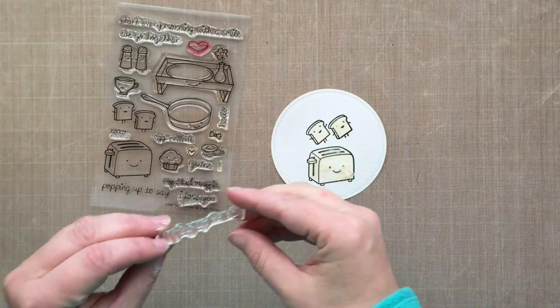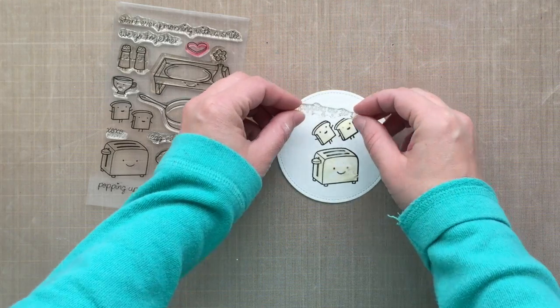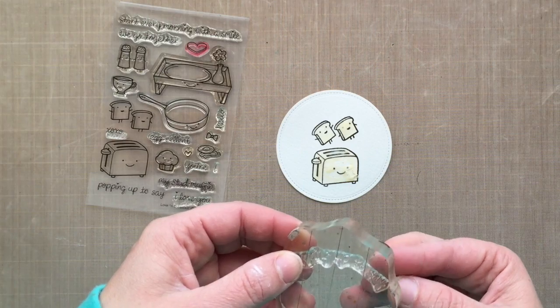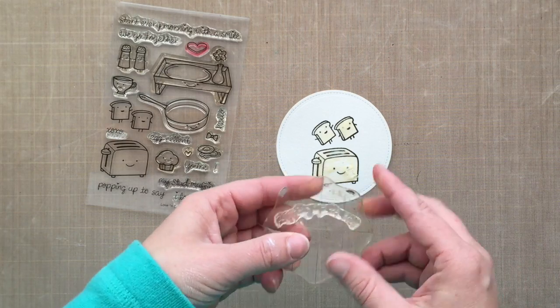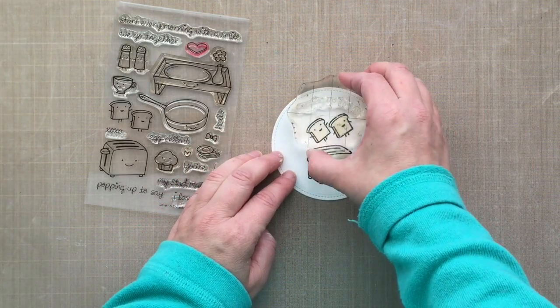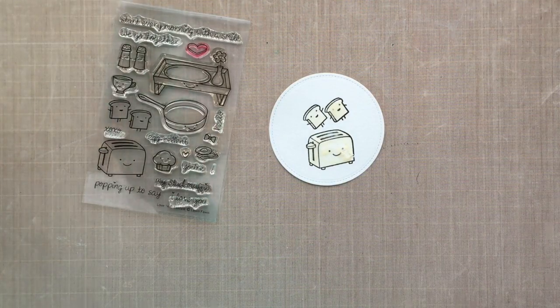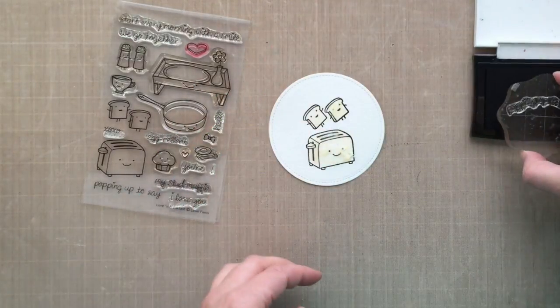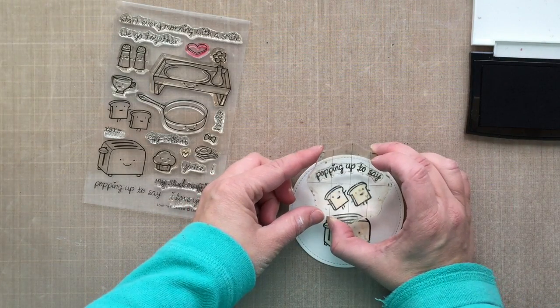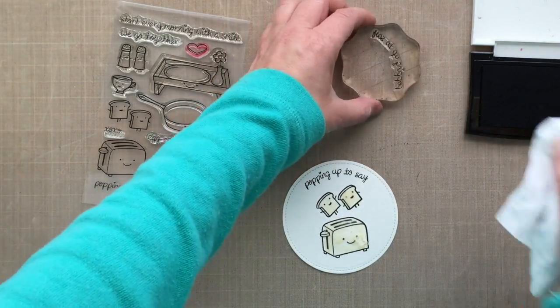As I'm allowing that to dry, I thought I'd go ahead and stamp the sentiment. One of the great things about clear stamps is that you can kind of use them how you want them. I want to arch my sentiment. So I'm going to mount it on my block at an arched angle. So that way my little popping up to say, which is what that sentiment says, is arched up at the top of the die cut or of the image here. I just think that's so cute and it's so much fun to arch your angles. You can put them at a diagonal. I just like that you're able to kind of bend those clear stamps and mount them on your acrylic block in unique ways. So I've gone ahead and stamped up popping to say.